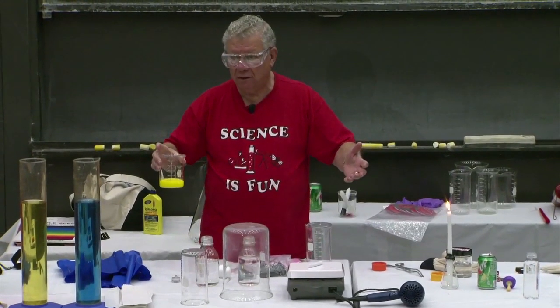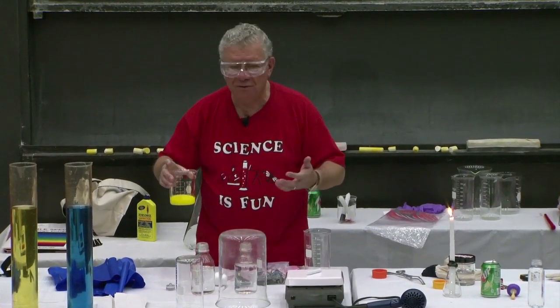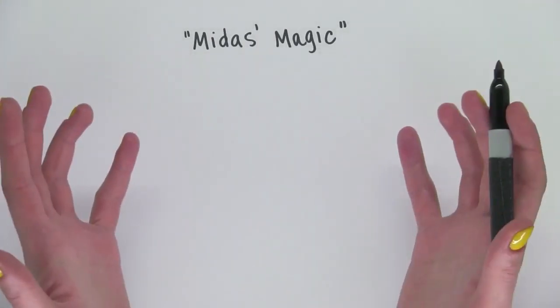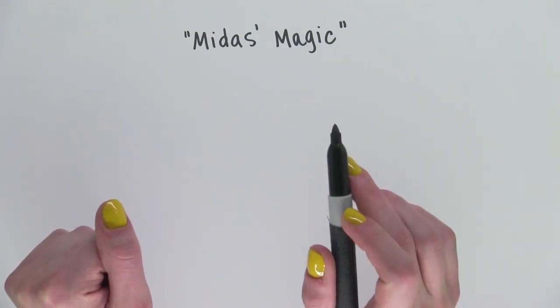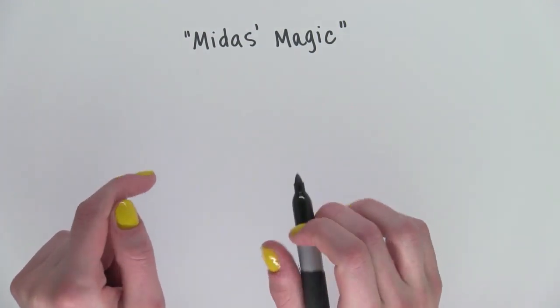So the magician never tells you how the trick works, right? But in science, we like to know what's going on. So what is going on? Let's break it down. Dr. Shakashiri started with two clear, colorless liquids.